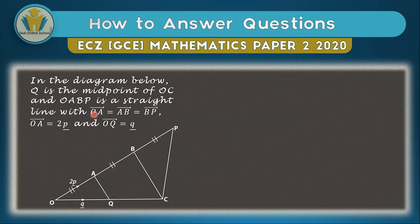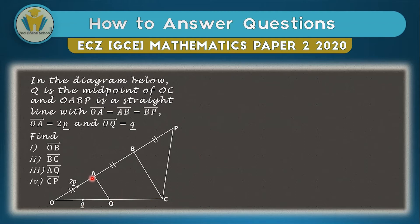They continue saying vectors OA, AB, and BP are equal, and that OA is equal to 2p, meaning AB and BP also equal 2p. They also tell us OQ is equal to q. In this question we're asked to find several vectors — let's begin.